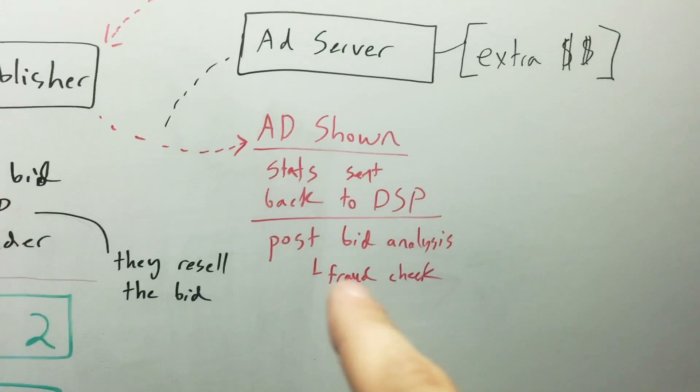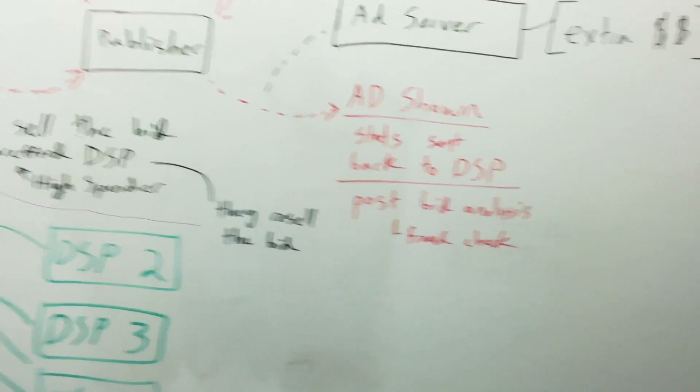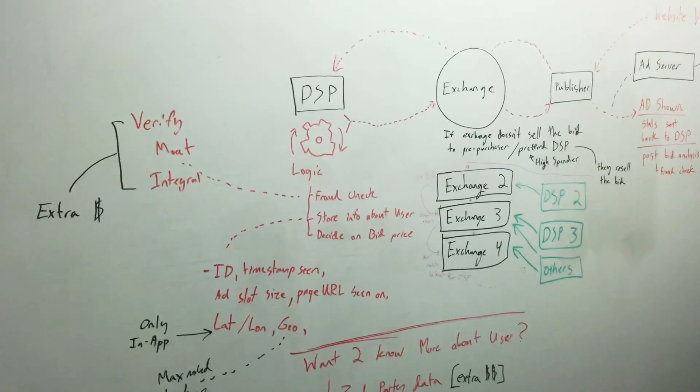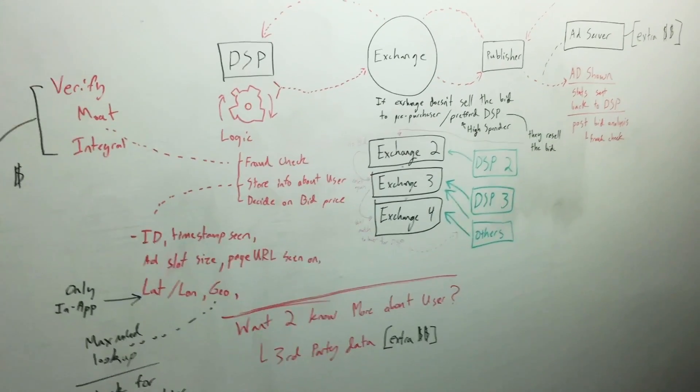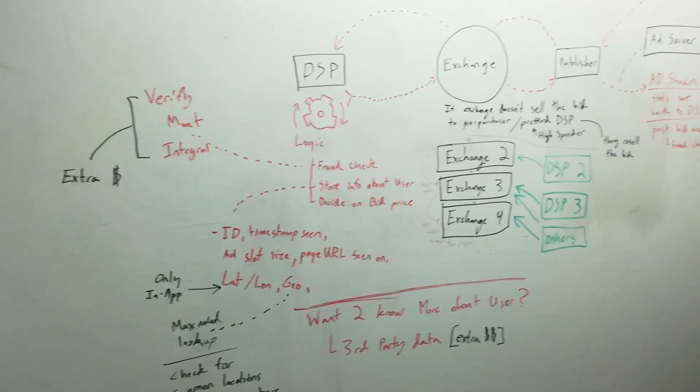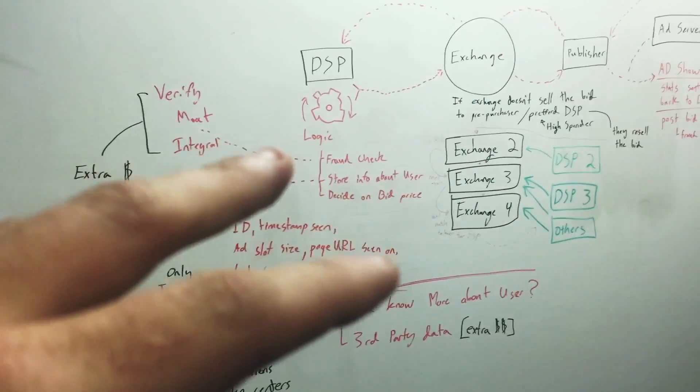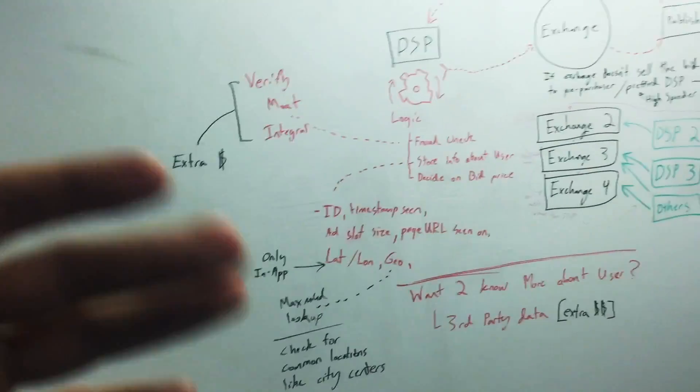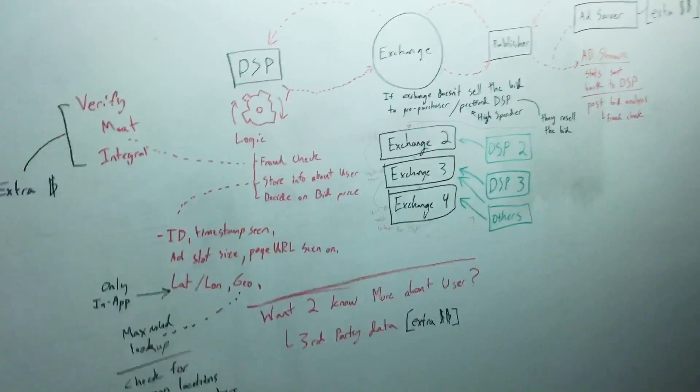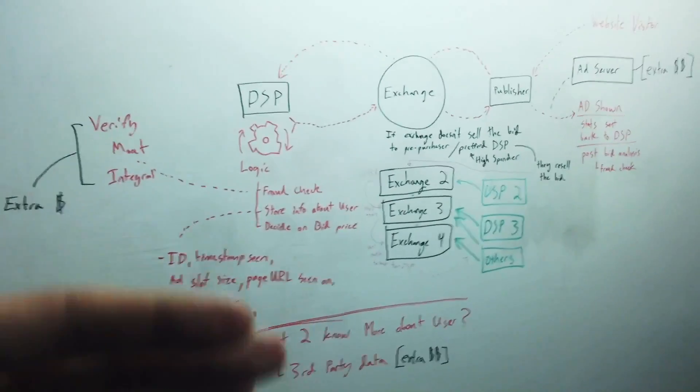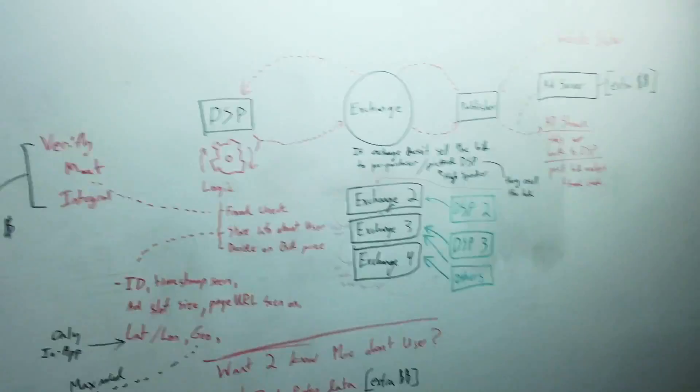The stats for the ad are sent back to the DSP and then they'll do like post-bid analysis, like did that ad actually get seen, was it on a viewable slot, how many clicks came out of that? And then you'll do fraud checks for domains with high click rates versus like the impression volume that they actually saw, and they'll start eliminating those things. So that's why you need like high budgets for certain campaigns, because you need a lot of money to go through the system to figure out what's going to work, what doesn't work, and then optimize your campaign out. So it's a per-campaign basis, certain ad slots might not work, all that kind of stuff. But this is just a general understanding of how many middlemen are in the bid flow to begin with.